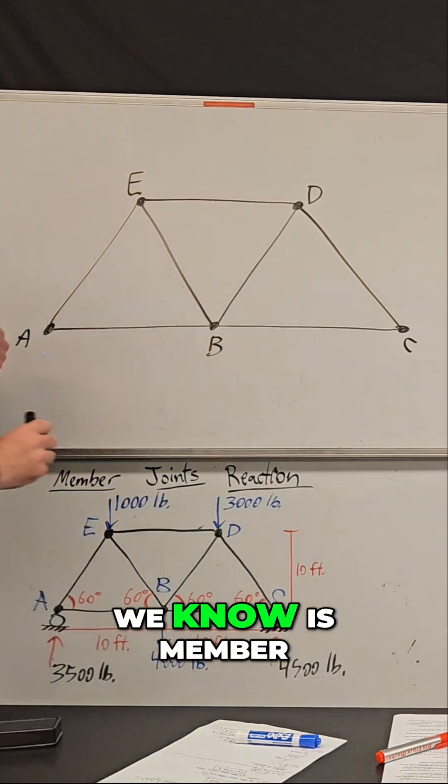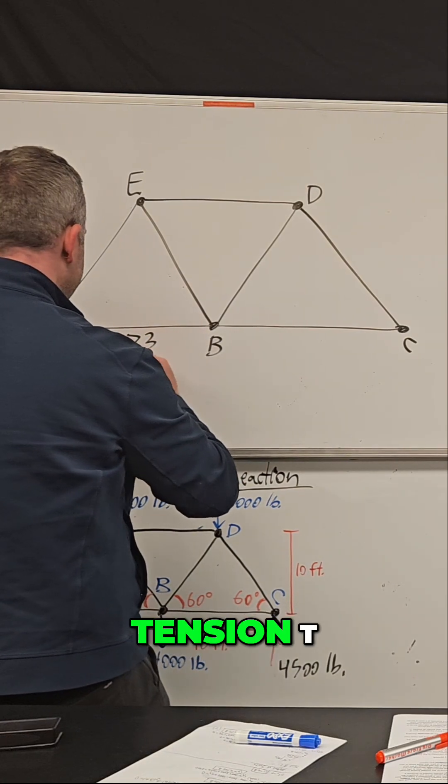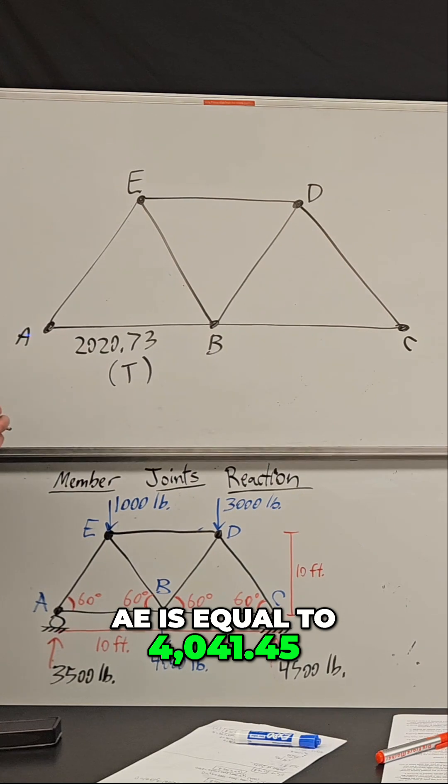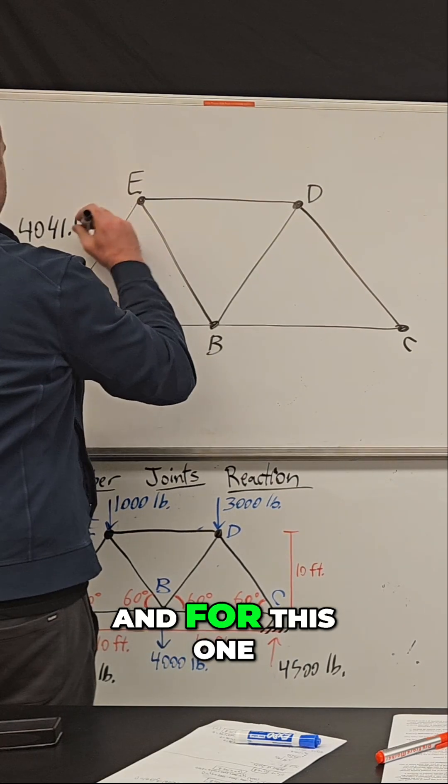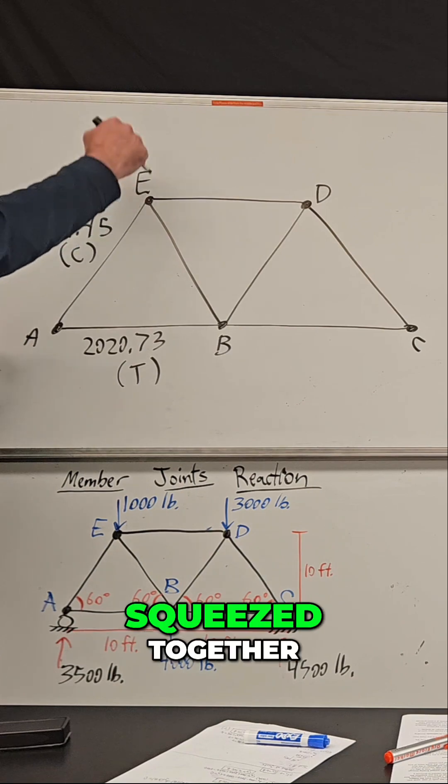So far, what we know is member AB is 2020.73, and I'm going to write tension T. We know member AE equals 4041.45, and for this one I'm going to write C because that one's in compression. So this one's being squeezed together.